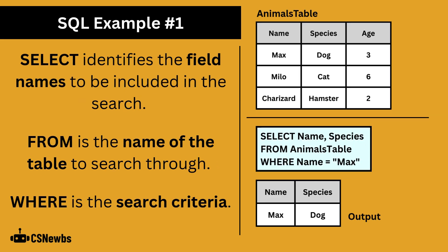SELECT identifies the field names to be included in the search. FROM is the name of the table to search through, and WHERE is the search criteria. In this example, the name and species fields have been selected from the animals table, where name is equal to max.